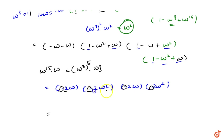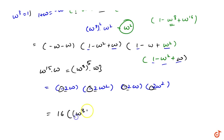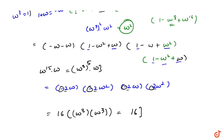We have 2 times 2 times 2 times 2, which equals 16. Multiplying the omega terms: omega times omega squared equals omega cubed, and omega times omega squared equals omega cubed, and omega cubed equals 1. So both omega products equal 1, and our final answer is 16.